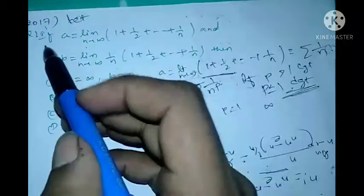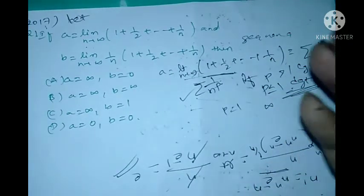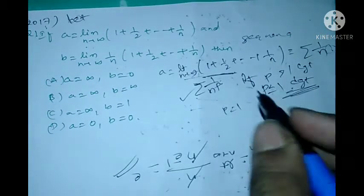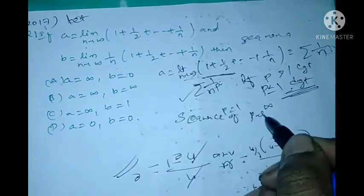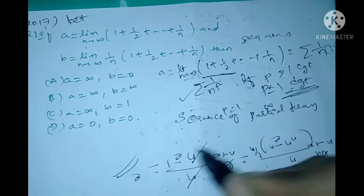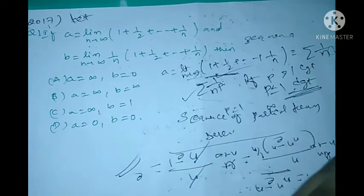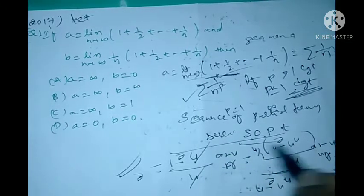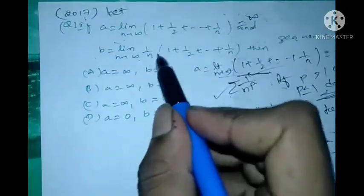Note: although the given question involves a sequence, I used the series result because a series is also a sequence — specifically, a sequence of partial sums. That is why I applied this direct result. Therefore A = infinity.